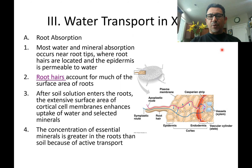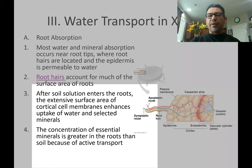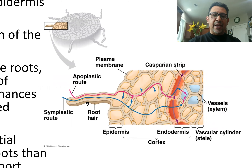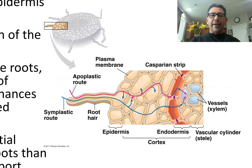We should begin this exploration by looking at what happens at the roots. When you explore the roots of plants, you're going to discover that there are these modified epidermal cells known as root hairs. Root hairs have an extended surface area that allows them to take up more water and minerals needed by the plant. It is because of this extended surface area that most of the surface of the root is made up by the surfaces of these root hairs.